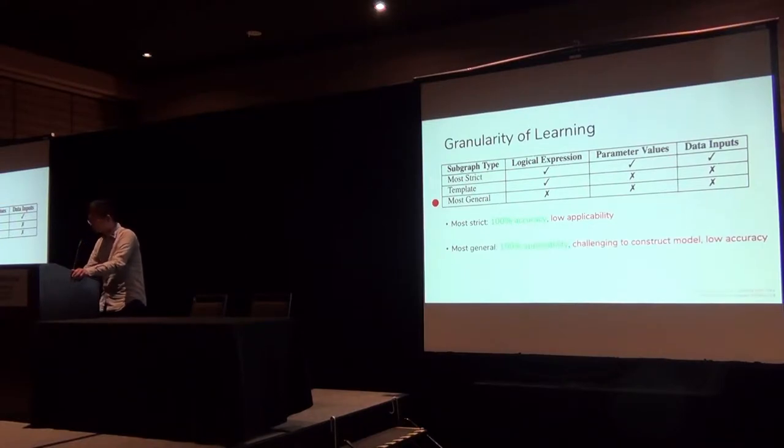Another extreme is when nothing is fixed. This implies that we will train a single model that can accept any subgraph and predict the output cardinality. The benefit is that it will lead to 100% applicability. But in practice, we found that it's pretty challenging to construct such a model because it's difficult to encode this variable length query DAG into a fixed length feature vector while preserving the DAG's structural information. And also because the resulting model is pretty challenging, the overhead of feature extraction and parameter tuning becomes pretty significant. In the paper, we take the middle ground. We learn a model for each subgraph template where we require the logical expression to be fixed, but we allow the parameter values and the input data to change. It's much easier to construct such a model because we're no longer required to featurize logical expression. And as we show in the paper, the resulting accuracy and applicability are both pretty high.